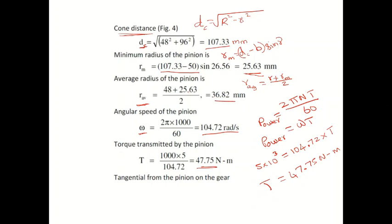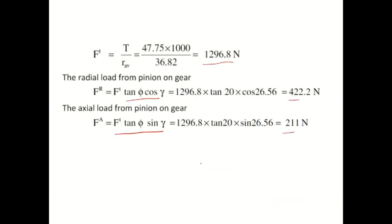With torque = 47.75 N·m and R_average = 36.82 mm, the force formulas are: F_T = T / R_average; F_R = F_T × tan(φ) × cos(γ); F_A = F_T × tan(φ) × sin(γ). Substitute all values to get the final force components.